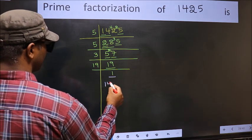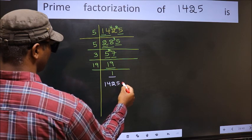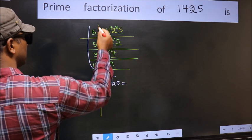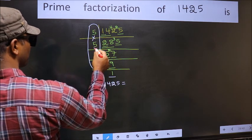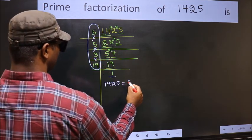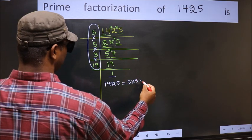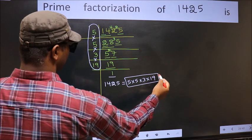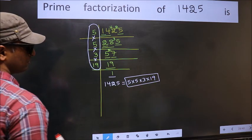So the prime factorization of 1425 is the product of these numbers. That is 5 times 5 times 5 times 3 times 19. This is the prime factorization of 1425.